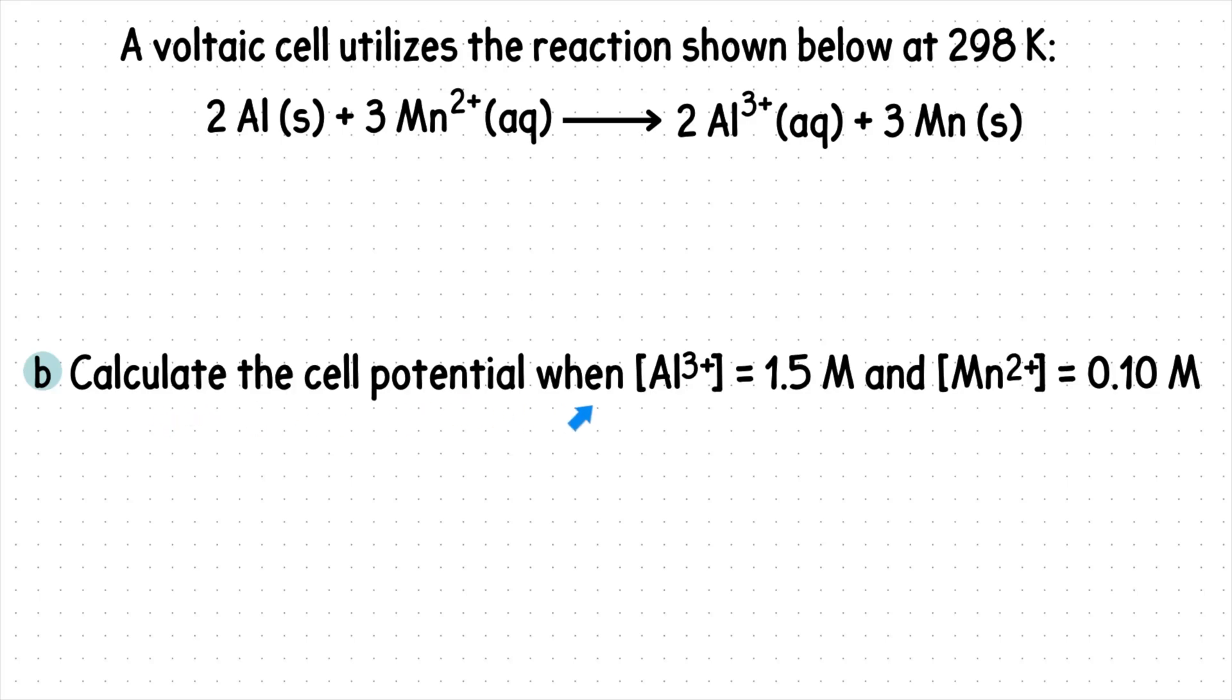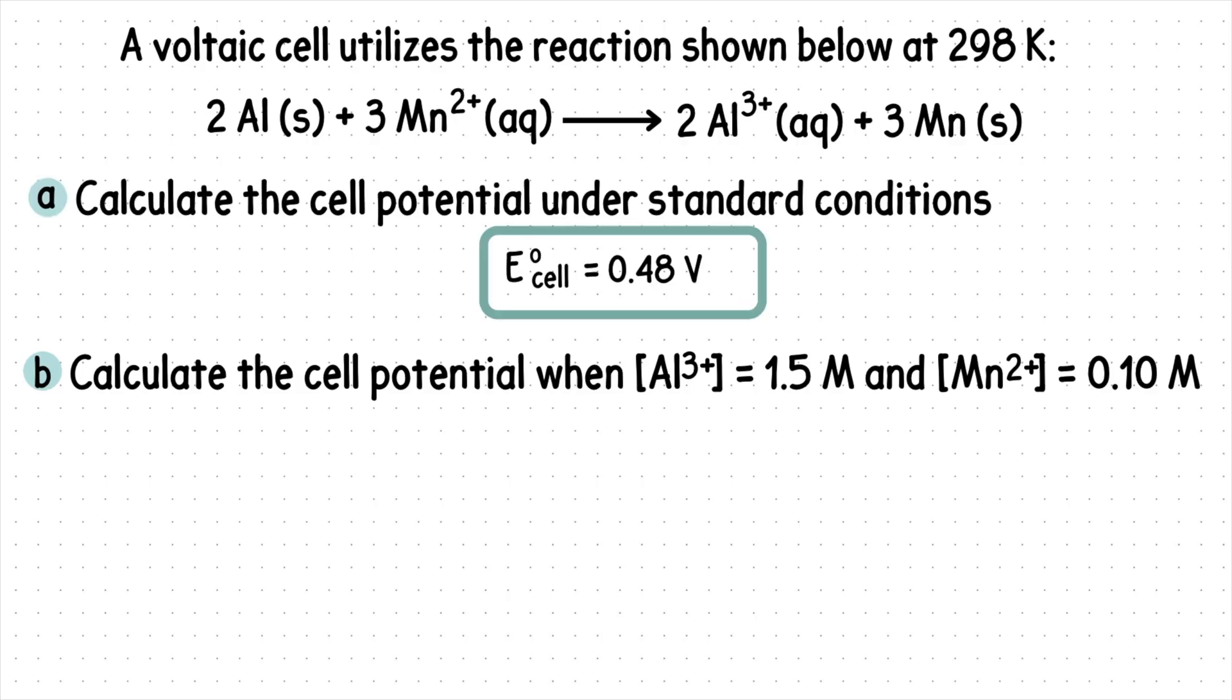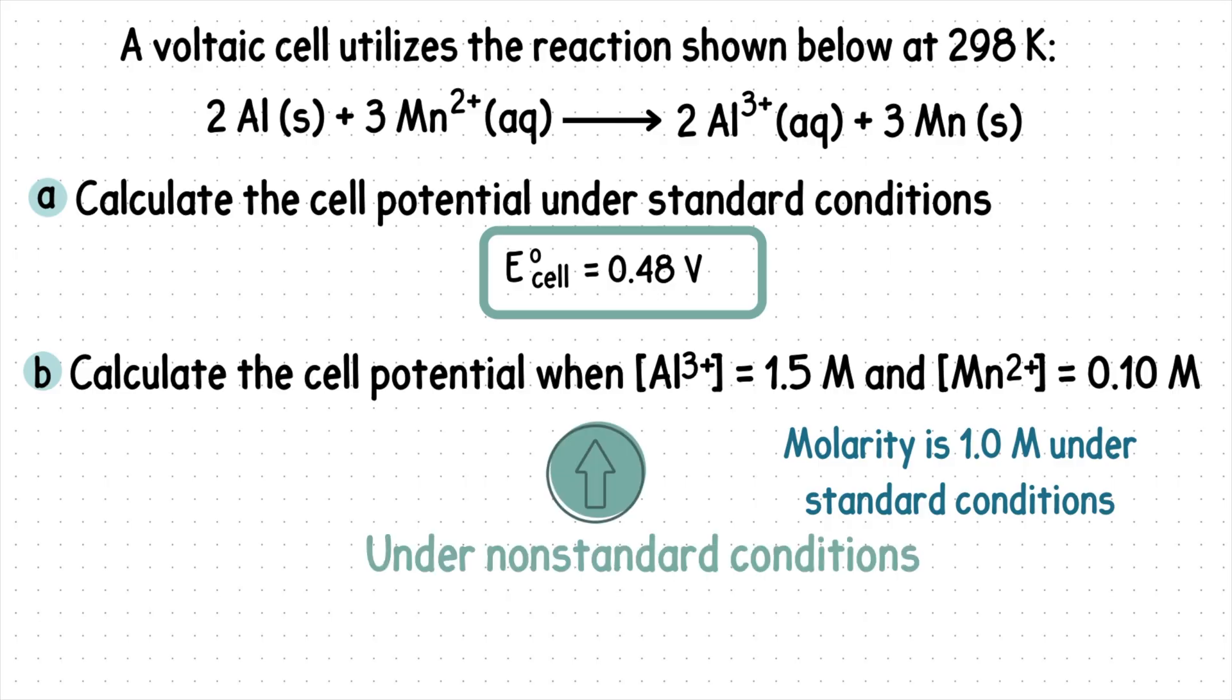We're asked to calculate the cell potential when given the following molarities. In the previous video we went over how to find the cell potential under standard conditions. We're going to need the value we found to figure out Part B. Recall that the molarity is 1.0 M under standard conditions. Since our given molarities are not 1, this is how we know we're finding the cell potential under non-standard conditions.